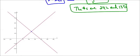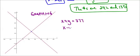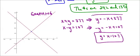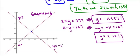Now let's use our last method: graphing. The numbers are really big, so I already graphed it. We had x plus y equals 377 and x minus y equals 107. Converting to slope-intercept form: the first becomes y equals negative x plus 377, and the second becomes y equals x minus 107. Label your y-intercepts — 377 and 107 — and label your point of intersection: (242, 135).